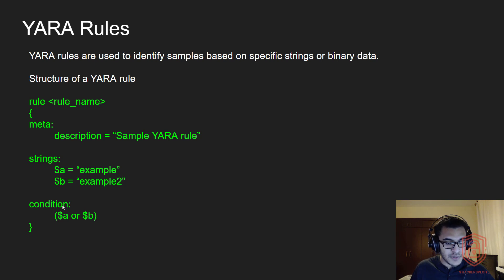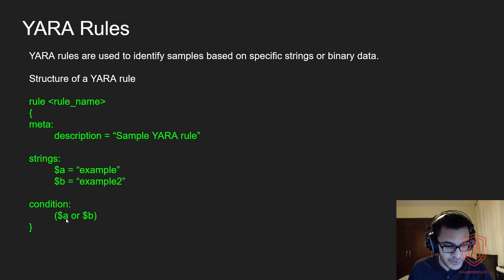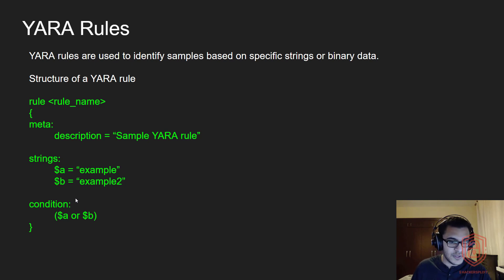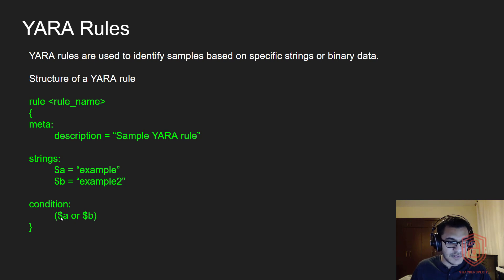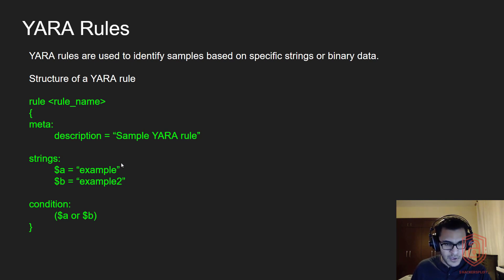And then finally, you have the logic, which is where you have your condition. Your conditions can be used to give you results that you're looking for. In this case, we want YARA to print out an output in the event that A or B is present — this could be strings or hexadecimal — and I'll show you how to specify them both.